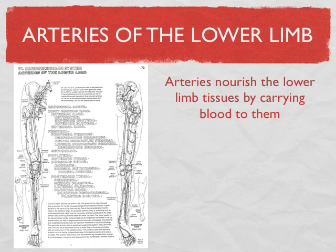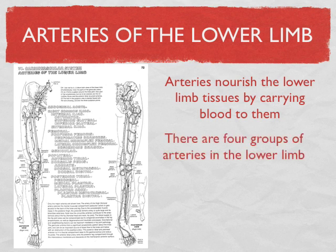In terms of the lower limb, arteries are going to nourish all of these tissues — they're going to bring oxygen-rich, nutrient-rich blood to all the living cells of all the tissues of the lower limb. As we look at the handout, they've outlined it in four groups. There's a hip group, a thigh group, a leg group, and leg-and-foot groups — one anterior and one posterior.